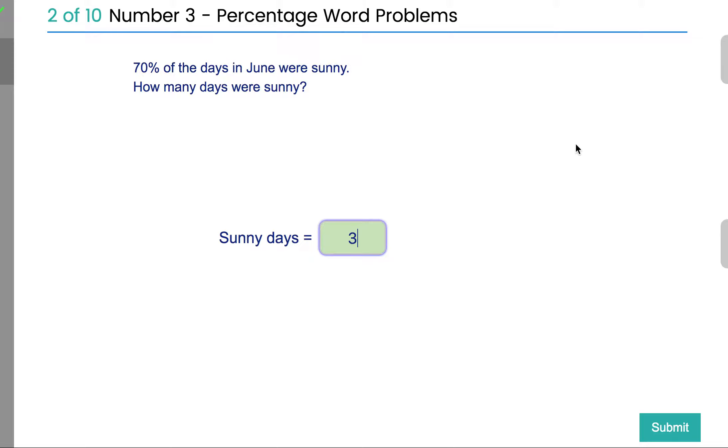we just keep adding up 3s until we get to 70%. So 10% is 3, 20% is 6, 30 is 9, 40 is 12, 50 is 15, 60 is 18, 70 is going to be 21 days. And we did that just by working out what 10% of the days were first, and then just counting up in 3s or counting up in 10%.